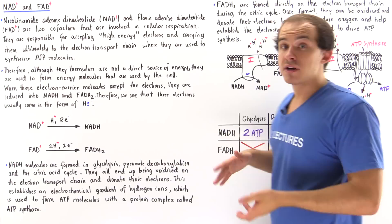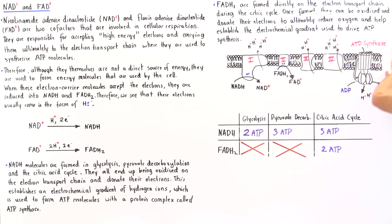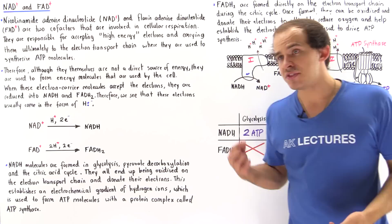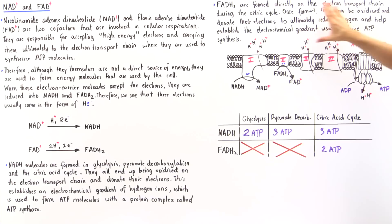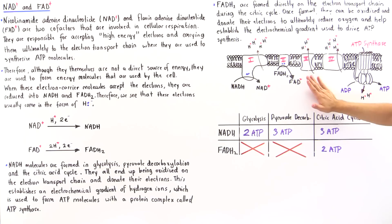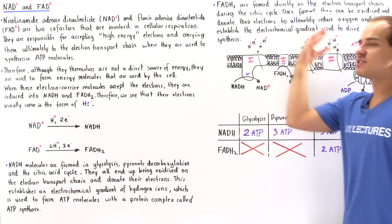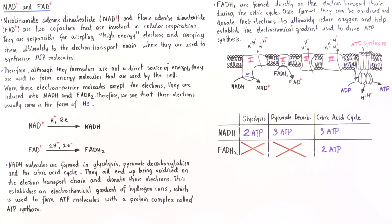The ATP synthase enzyme uses the electrochemical gradient — the higher concentration of H+ ions in the intermembrane space — to drive H+ ions down their electrochemical gradient back into the mitochondrial matrix. This movement, driven by the gradient established by protein complexes 1, 3, and 4, synthesizes ATP from ADP.